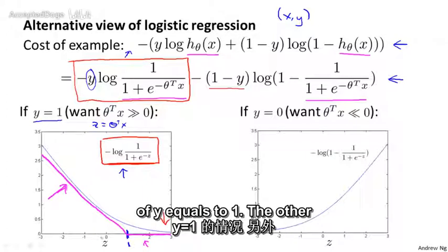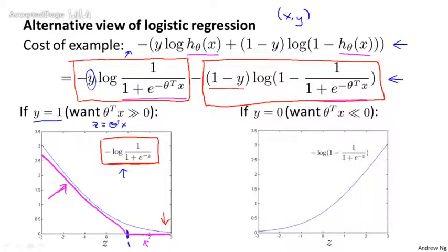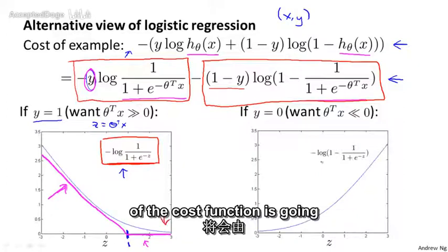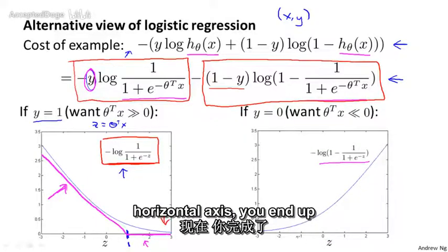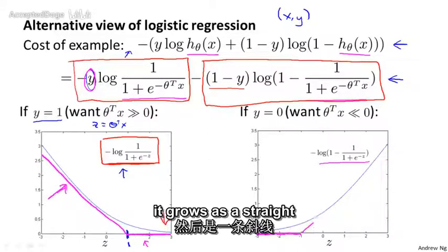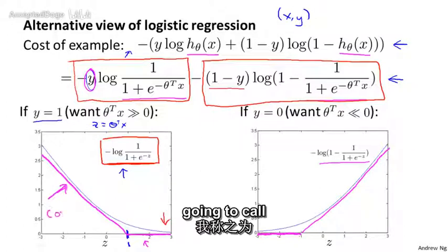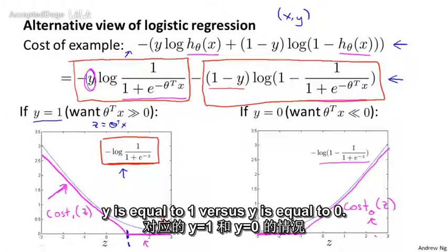The other case is y equals 0. In that case, only the second term applies because the first term goes away when y equals 0. The contribution to the cost function is given by that second term, and if you plot it as a function of z you get the corresponding curve. For the support vector machine, we replace this with a new cost that is flat at 0 on the right and grows as a straight line on the left. I'm going to call the y = 1 cost function cost₁(z) and the y = 0 cost function cost₀(z).